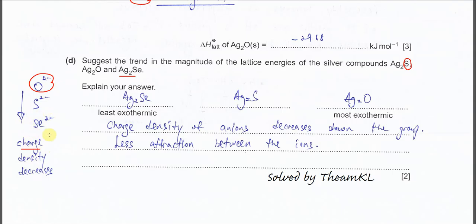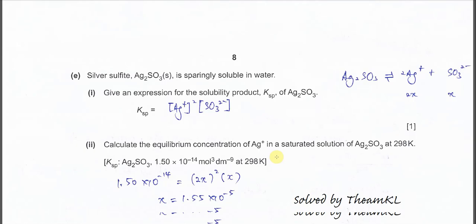And of course, when down the group, the charge density is getting lesser. So we know that the attraction between the silver ion and this anion is getting weaker. So release lesser energy. So that's why the most exothermic must be the Ag2O, this silver oxide, and followed by Ag2S and Ag2Se. So just explain like this: charge density of anion decreases because getting larger, same charge. Therefore less attraction between the ions, the silver ion and this anion.